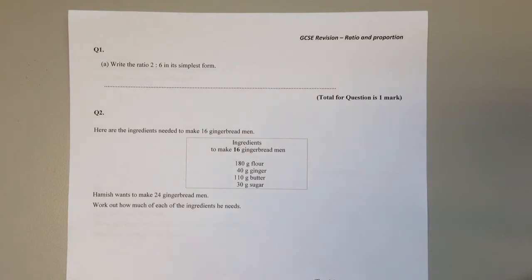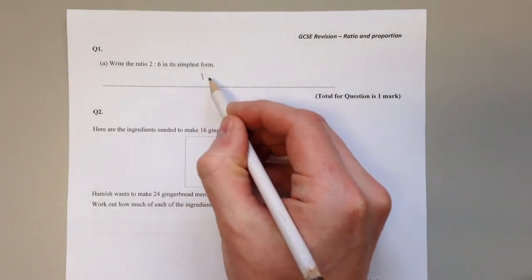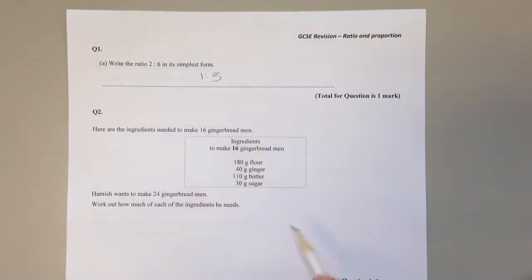We've got to write the ratio 2 to 6 in its simplest form. We can simplify ratios the same way we simplify fractions. We divide both sides by the same number. Both 2 and 6 are in the 2 times table. 2 divided by 2 is 1, and 6 divided by 2 is 3.